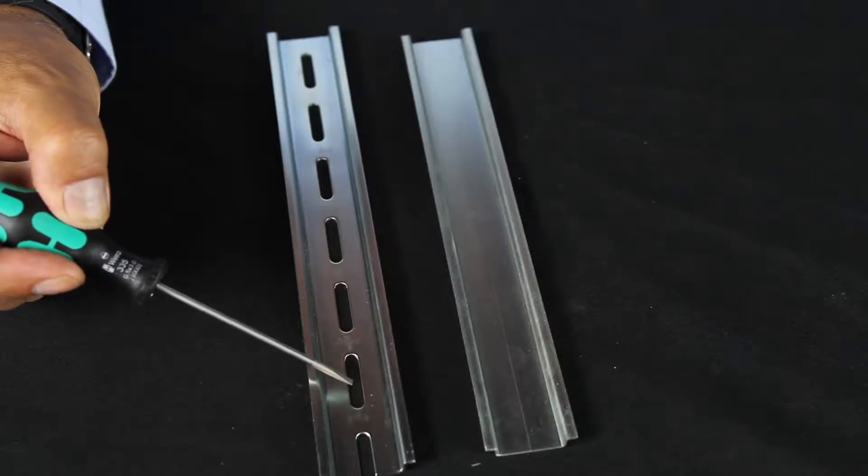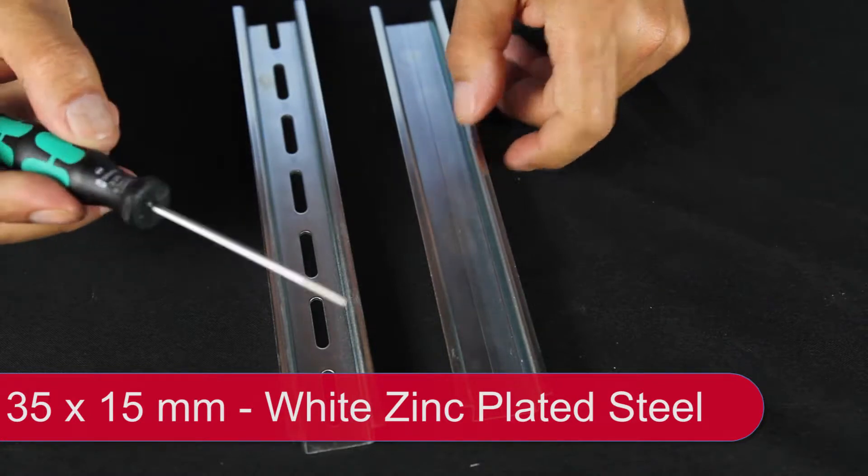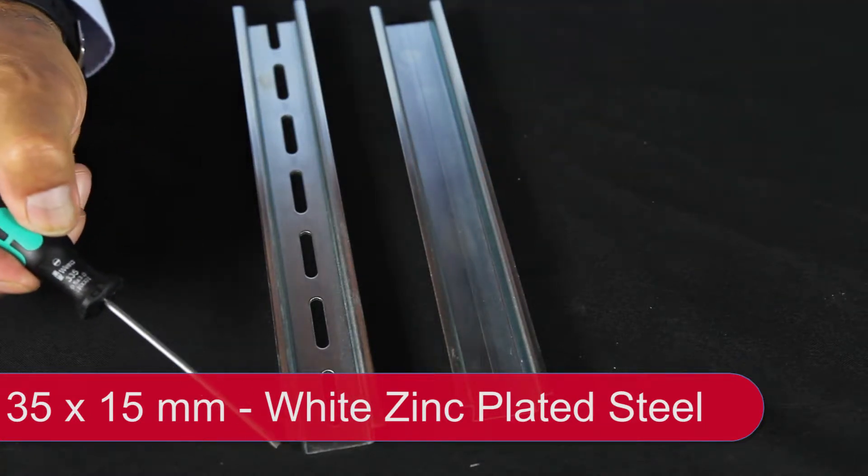The slots are 25 millimeters long on 36 millimeter centers. The second two rails are 35 by 15 millimeters high.